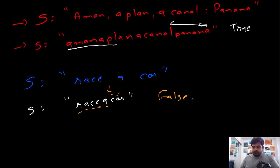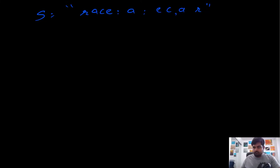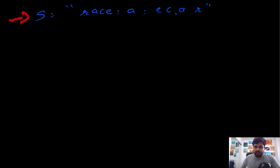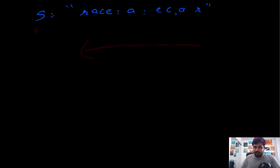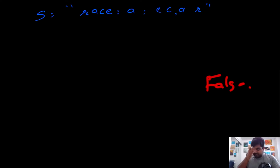Now let's look at the approach to solve this problem. Suppose we are given a string and need to determine if it is a palindrome. The approach I'm suggesting: first iterate over the string and remove all non-alphanumeric characters, then create a new string that is the reverse of the cleaned string. Now with both strings at our disposal, we compare them — if they are the same, return true; if not, return false.